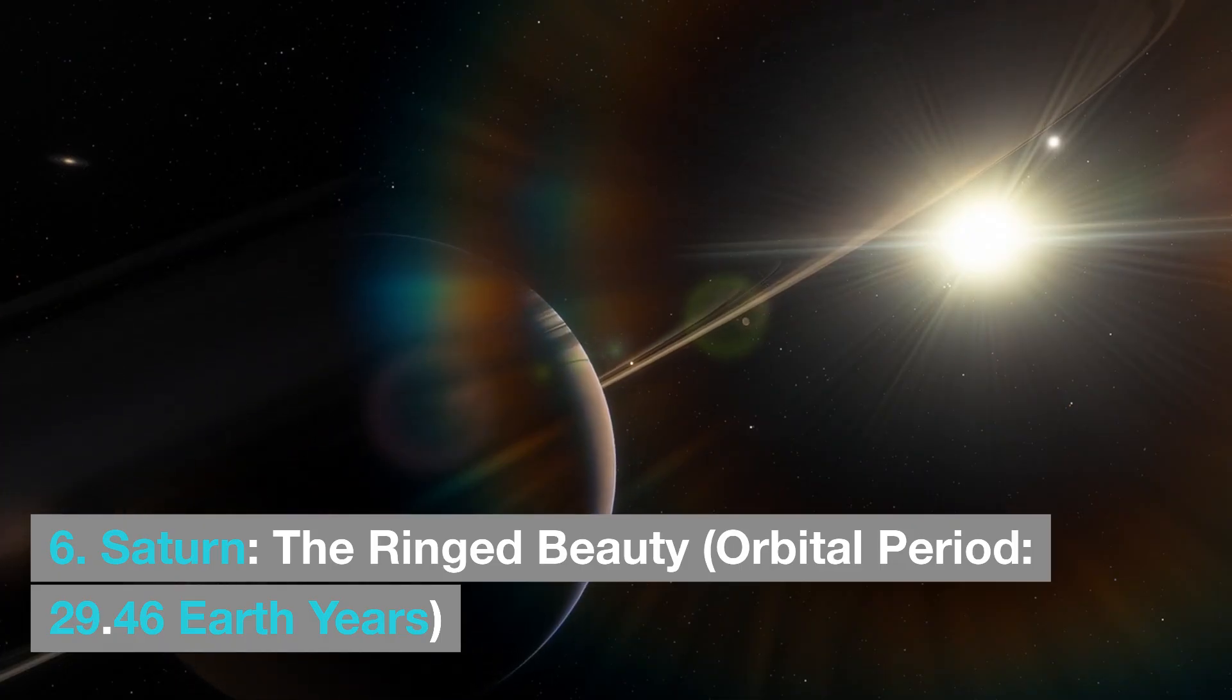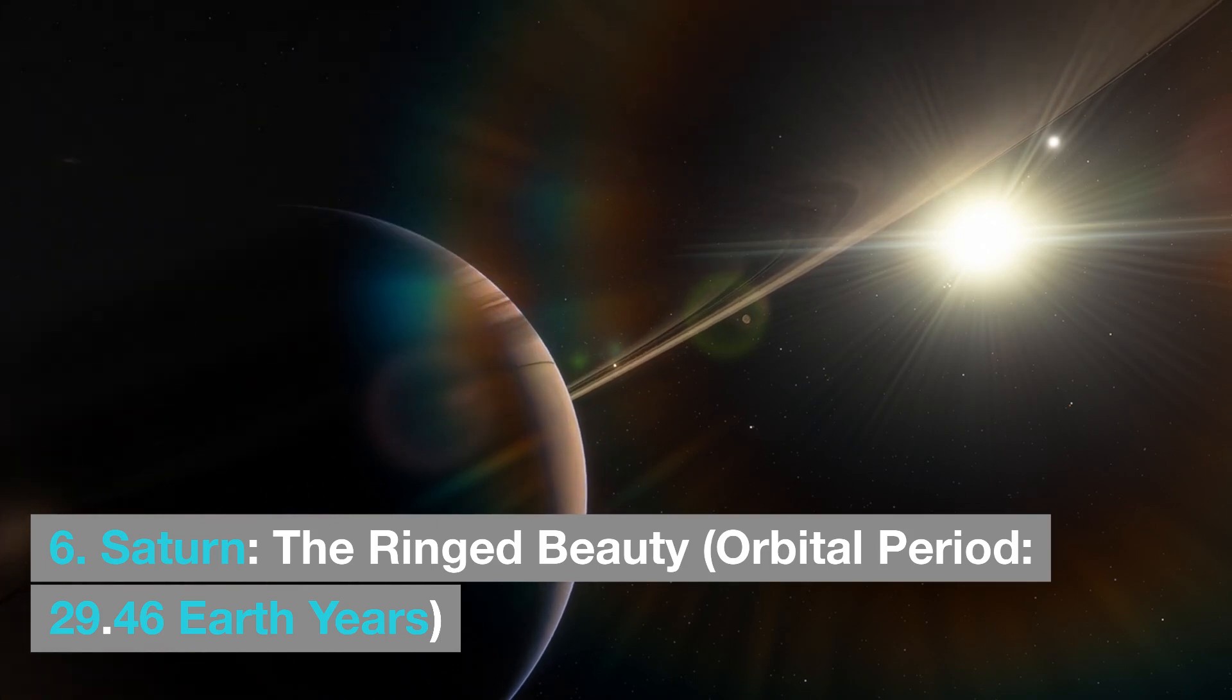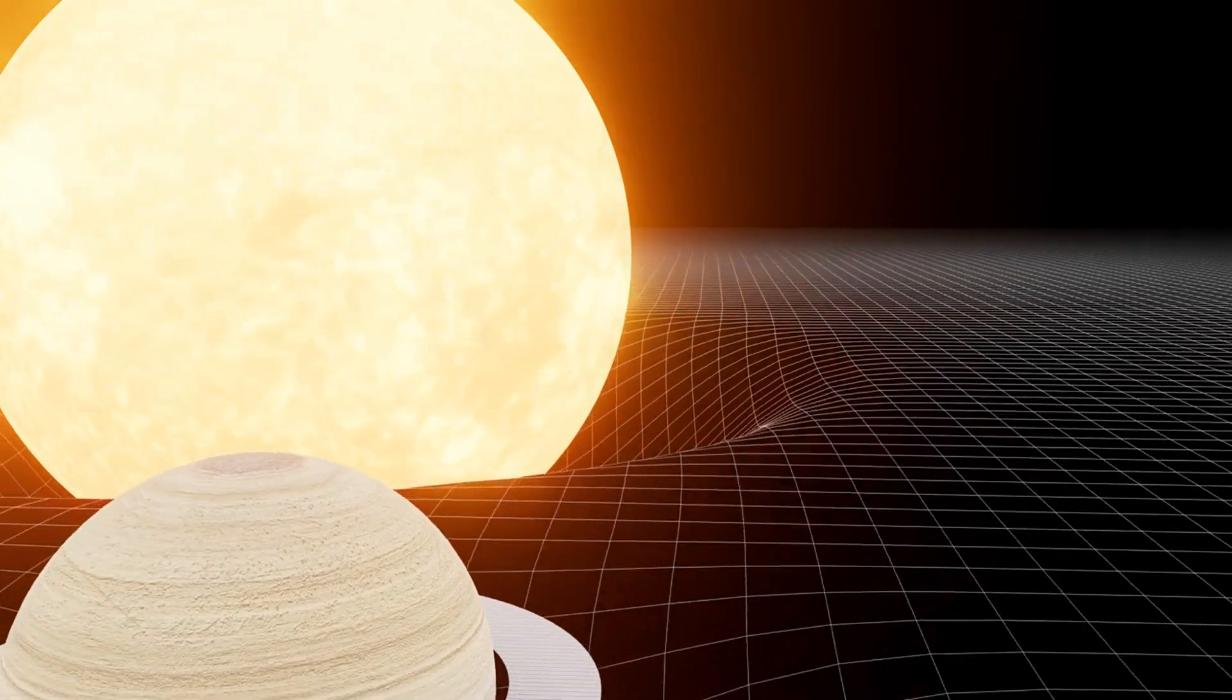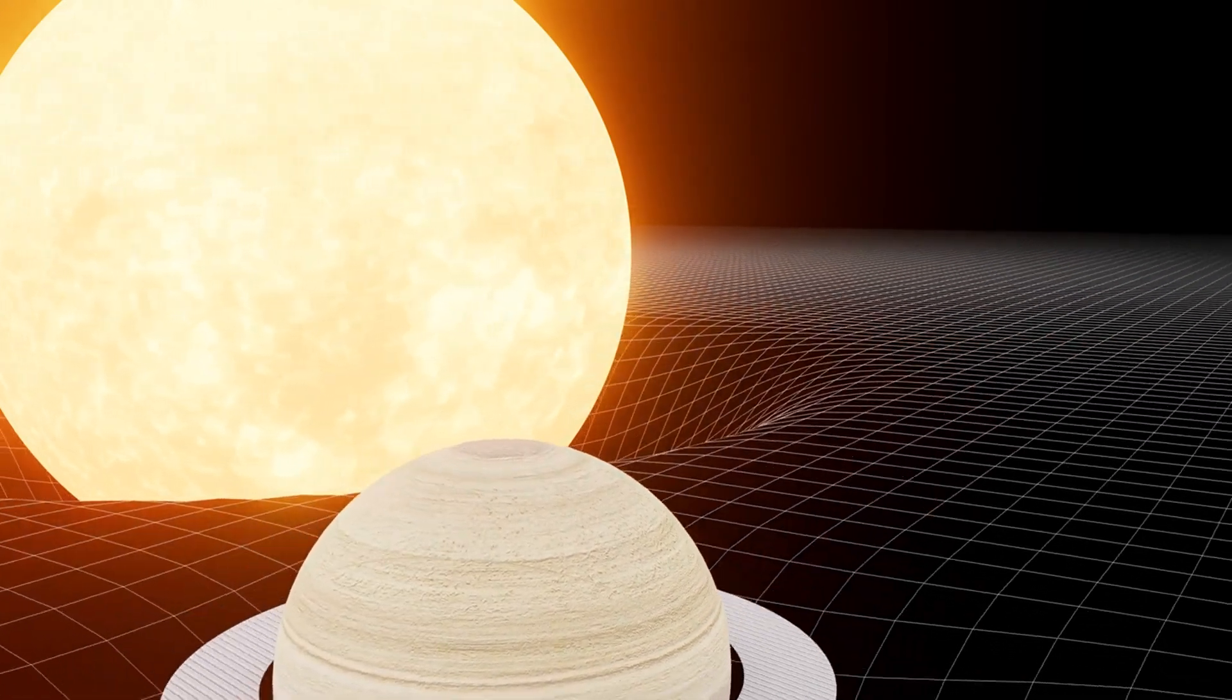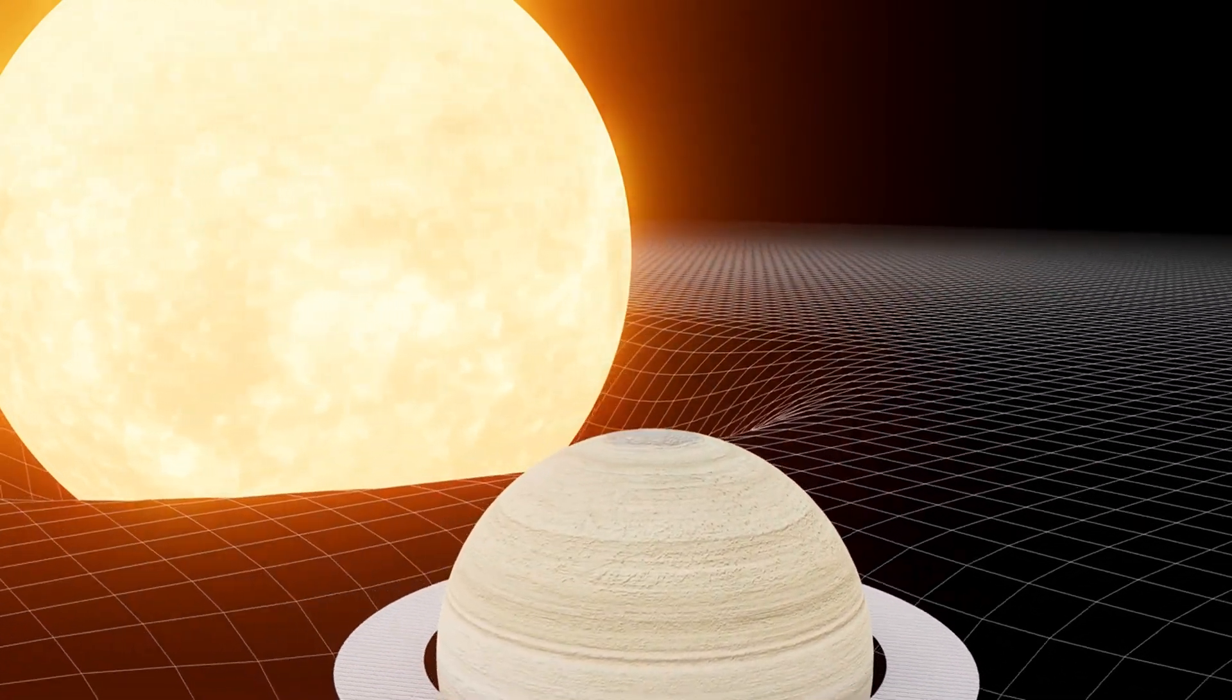Saturn, the ringed beauty, orbital period 29.46 Earth years. The orbital period of Saturn, a planet known for its magnificent ring system, is roughly 29.46 Earth years.